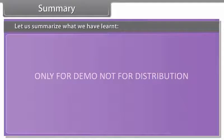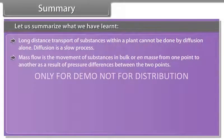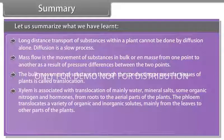Summary. Let us summarize what we have learned. Long distance transport of substances within a plant cannot be done by diffusion alone. Diffusion is a slow process. Mass flow is the movement of substances in bulk or en masse from one point to another as a result of pressure differences between the two points. The bulk movement of substances through the conducting or vascular tissues of plants is called translocation. Xylem is associated with translocation of mainly water, mineral salts, some organic nitrogen and hormones from roots to the aerial parts of the plants. The phloem translocates a variety of organic and inorganic solutes, mainly from the leaves to other parts of the plants.